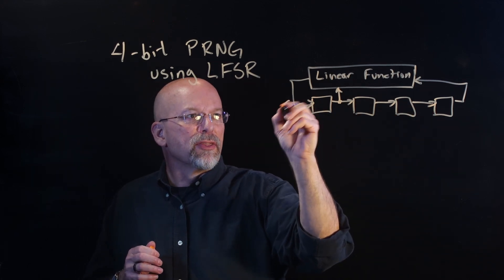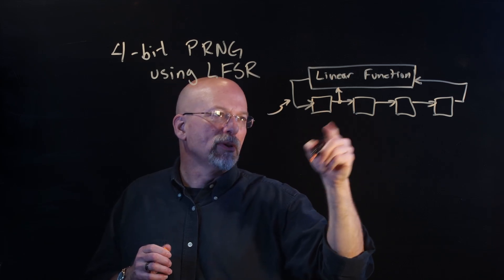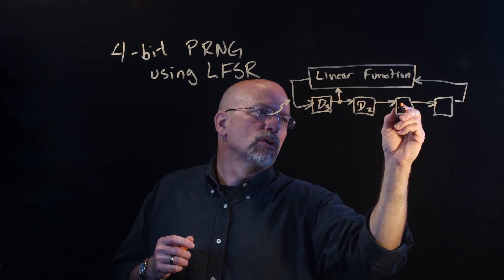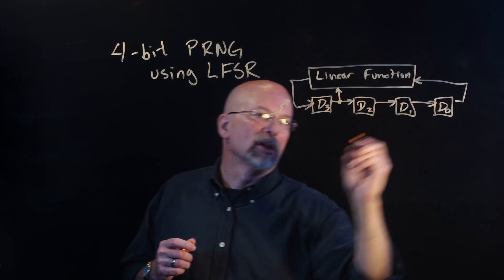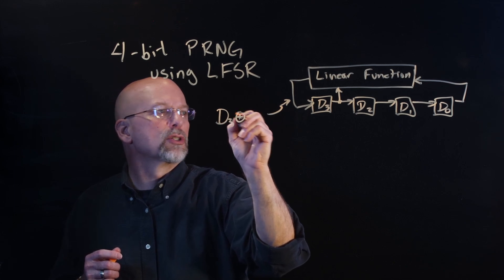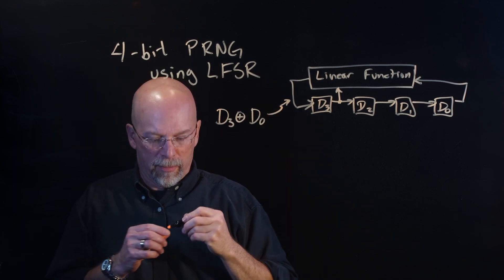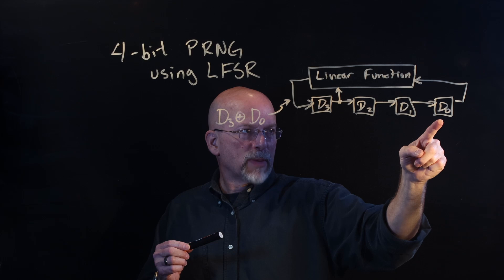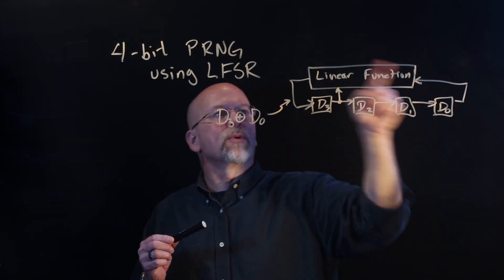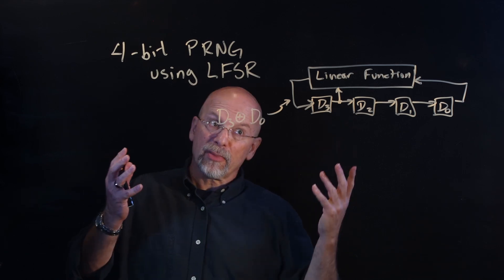Basically, if I label these guys D3, D2, D1, D0, then this position right here is D3 exclusive ORed with D0. So, if this bit and this bit are the same, we're going to input a 0 here. If this bit and this bit are different, we're going to input a 1 there.